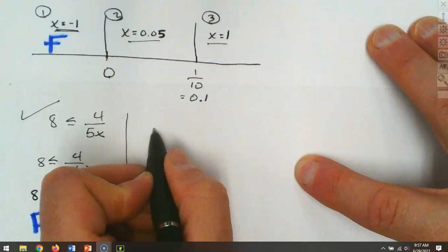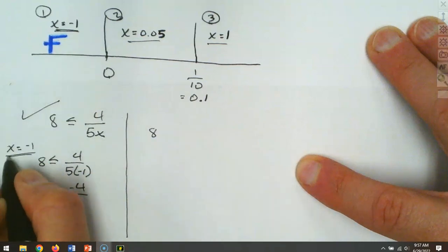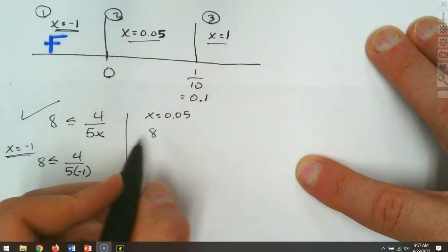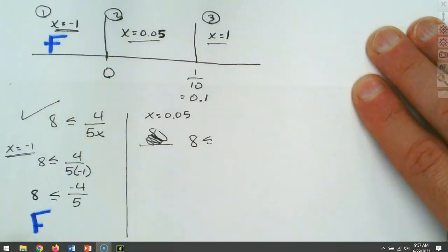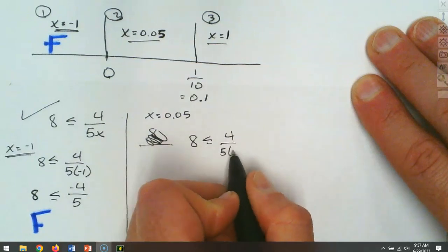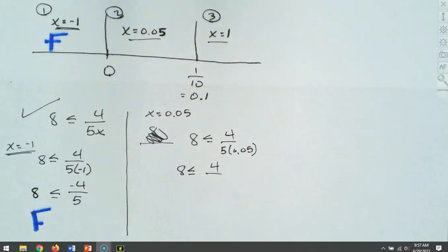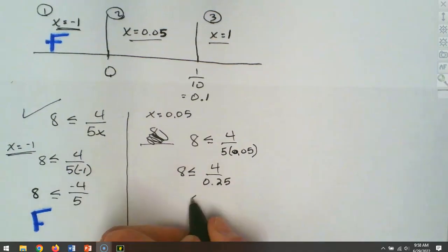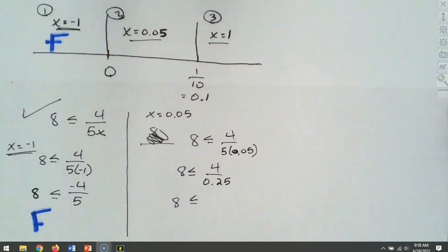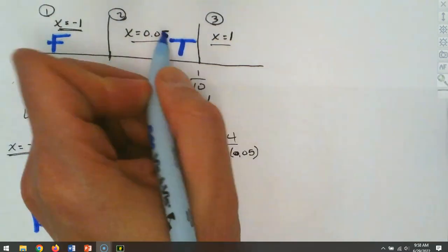Now we try x = 0.05. We've got 8 is less than or equal to 4 over (5 times 0.05). That's 4 divided by 0.25, which equals 16. Is 16 bigger than 8? Yes — so that piece is true.